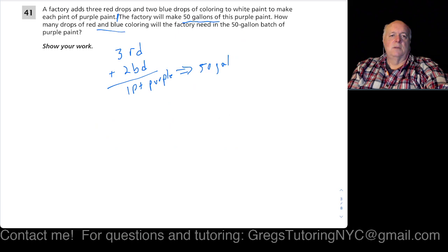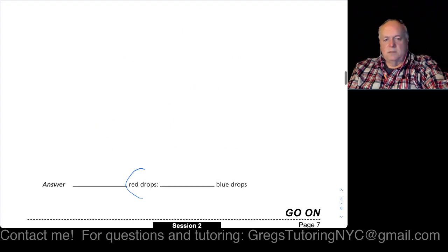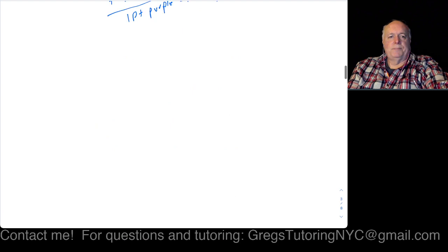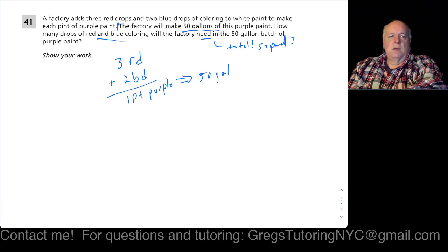How many drops of red and blue coloring will the factory need? I'm left asking, do they mean in total or separately? Seems to me if we get the total we have to figure that out. Let's take a peek at the answer so we know what we're doing. Okay, red is distinct from blue, so we just need the total number of drops in the 50-gallon batch.